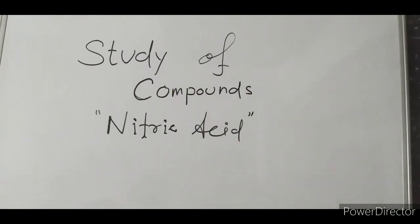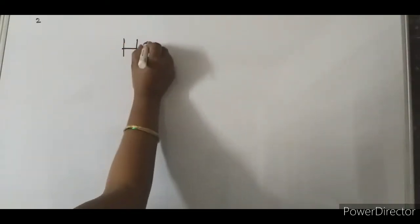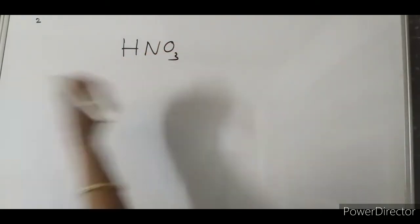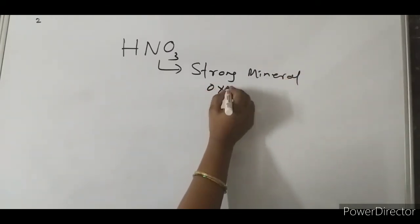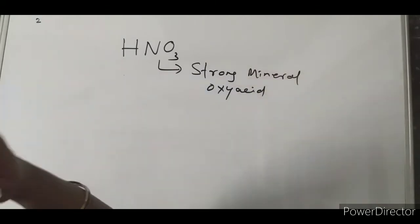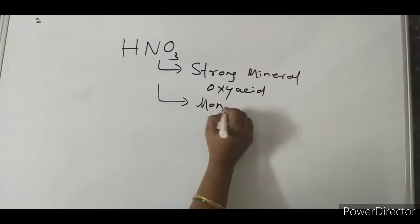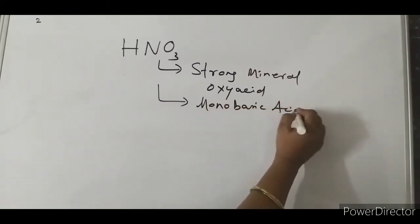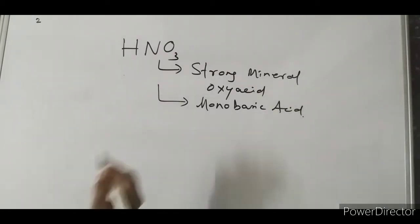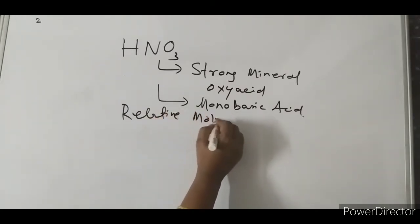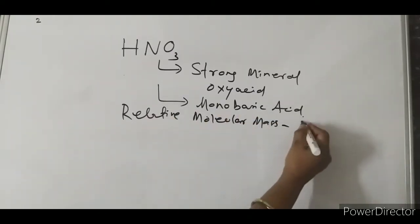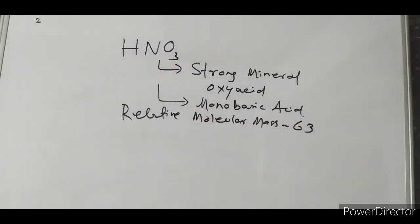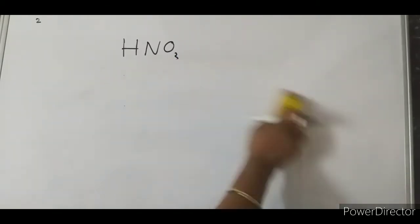This topic is the study of compounds and nitric acid. Nitric acid is represented as HNO3. It is a strong mineral oxy acid and has one replaceable hydrogen atom, which is why it is a monobasic acid. Its relative molecular mass is 63.